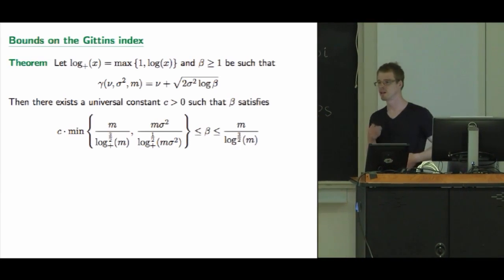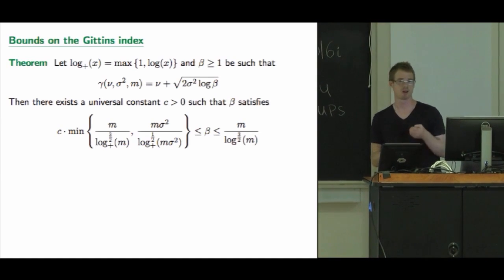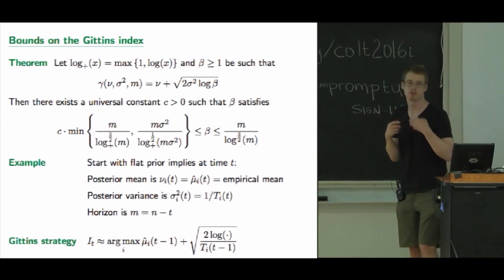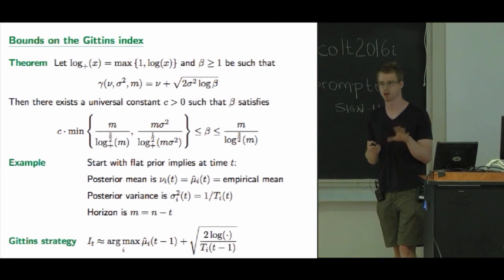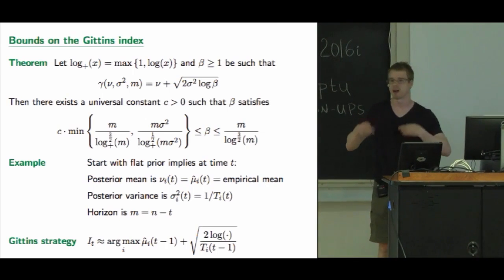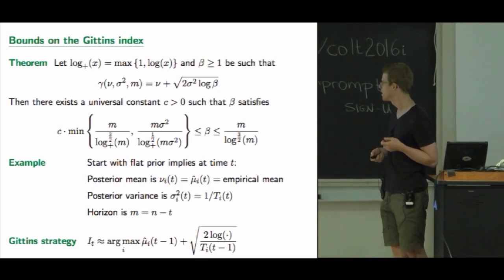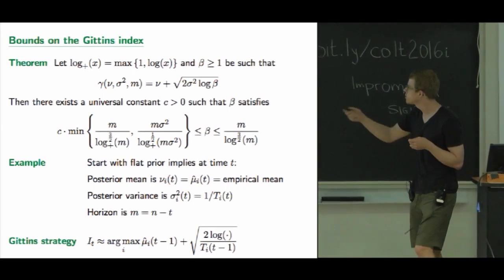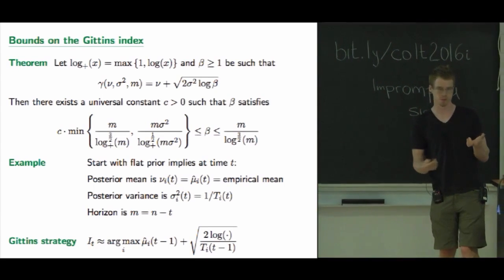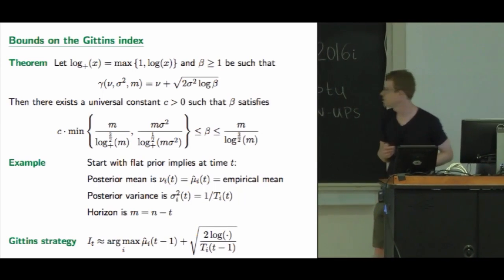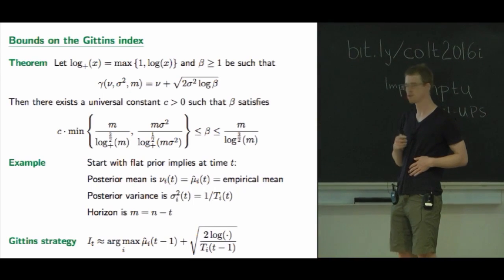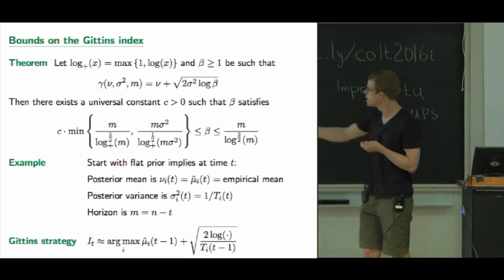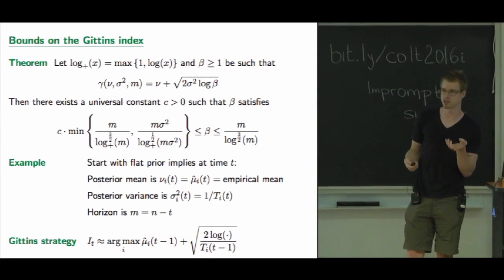The bound says it looks like the mean plus some sort of confidence interval — a standard error with a log beta, where beta is like your confidence parameter. In the simple case with a flat prior — the improper Gaussian prior with infinite variance — after playing for a while and updating the posterior, the posterior mean is the empirical mean and the posterior variance is one divided by the number of times you've played that arm. Plugging this in, the Gittins index looks like the empirical mean plus a confidence interval, which should be really familiar if you know UCB. The only tricky thing is what's inside the log, and that's what the approximation gives you.